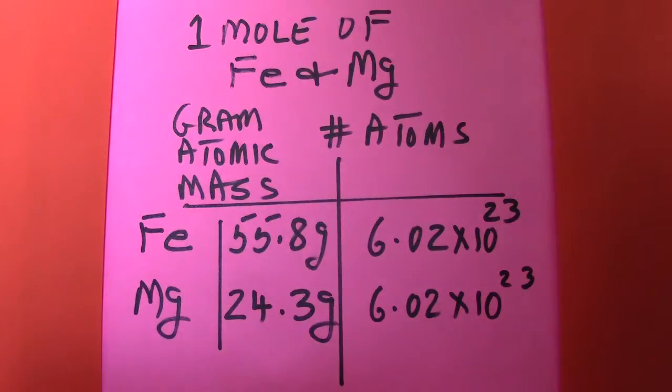If you want to know how many atoms are in 10 moles of magnesium you take 6.02 times 10 to the power of 23 and multiply by 10. If you want to know what is the gram atomic mass of 10 moles of magnesium you take 24.3 and multiply it by 10. So you can go back and forth.